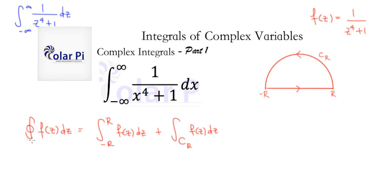What we're going to do is take the limit as r goes to infinity. When we do that, you will find that this second integral over the semicircular arc is going to go to zero. I justify that in great detail in that other video, which I'll link below, so check that out. The argument is very similar for this one once you've checked out that other video.